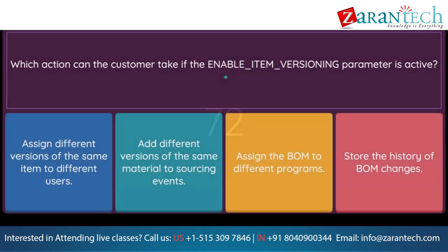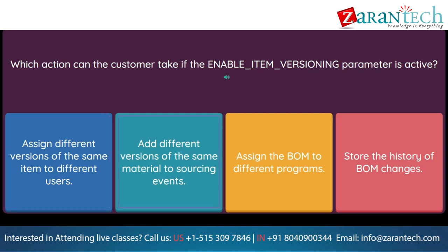Question: Which action can the customer take if the enable_item_versioning parameter is active? Option 1: assign different versions of the same item to different users. Option 2: add different versions of the same material to sourcing events. Option 3: assign the BOM to different programs. Option 4: store the history of BOM changes.